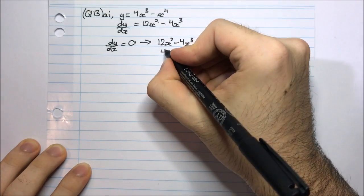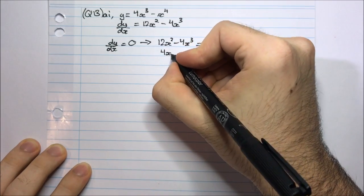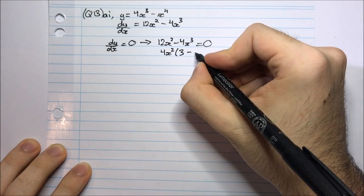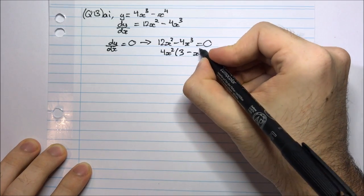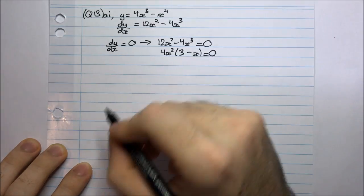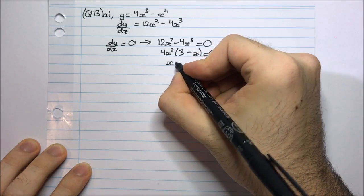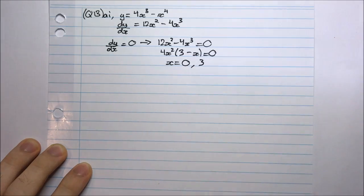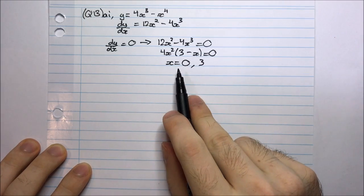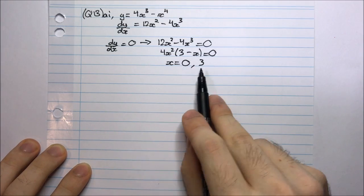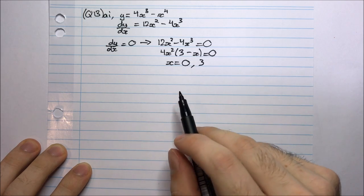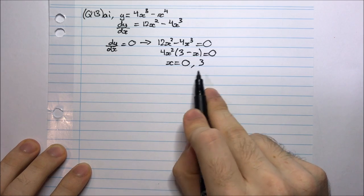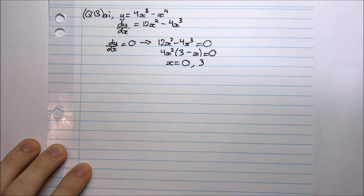Factoring out 4x squared gives me, here I'm left with 3, and here I'm left with x equal to 0. So once I solve that, that's x equal to 0 and x equal to 3. So I know that I have stationary points at these two x values, and I need to work out the nature of these stationary points.